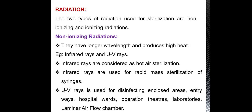Radiation: two types of radiation are used for sterilization. One is non-ionizing radiation, another is ionizing radiation. Non-ionizing radiation has longer wavelength and produces high heat. Examples: infrared and UV rays. Infrared rays are used for rapid mass sterilization of syringes. UV rays are used for disinfecting enclosed areas such as entry areas, hospital wards, operation theatres, laboratories, and laminar air flow chambers.